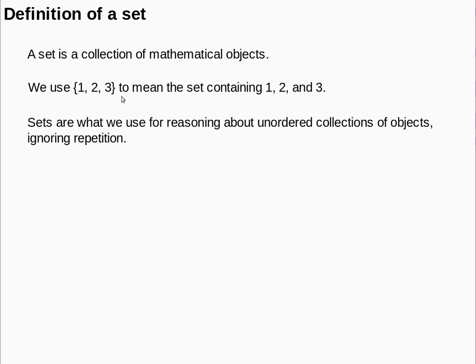A set is simply a collection of mathematical objects, and we tend to notate those using curly brackets. So {1, 2, 3} in curly brackets means the set of the mathematical objects 1, 2, and 3.